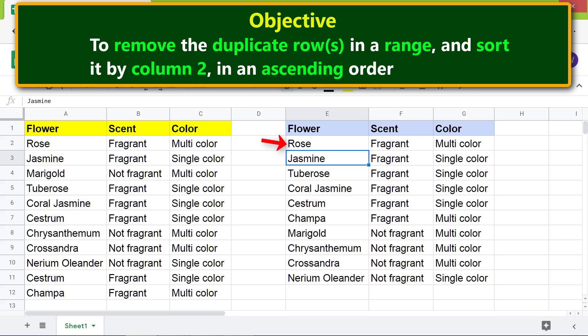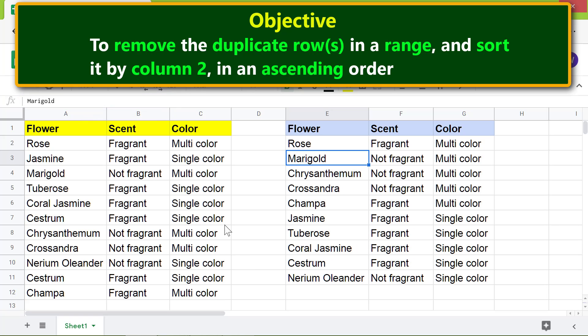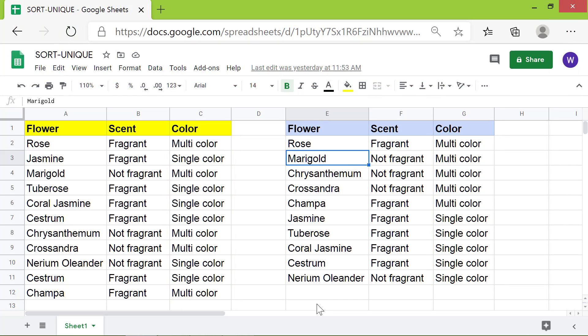Click this cell. Type 3 for the sort column. Okay, the SORT function has sorted the data by the third column. That's it folks! Thank you for watching this video. Please subscribe to this channel.